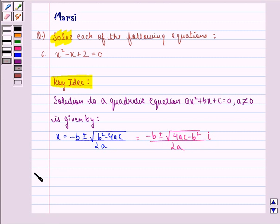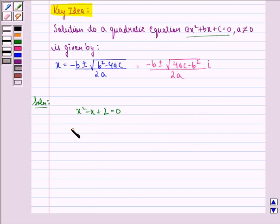Now we start with the solution to this question. The equation given to us is x squared minus x plus 2 equal to 0. If we compare this equation with ax squared plus bx plus c equal to 0, we get a is equal to 1, b equal to minus 1, and c equal to 2. Now we find b squared minus 4ac.